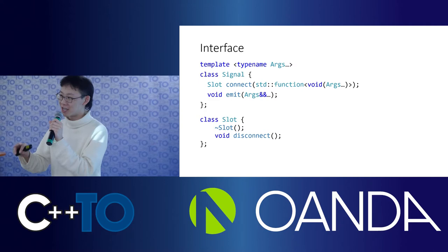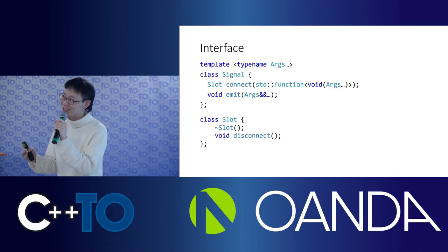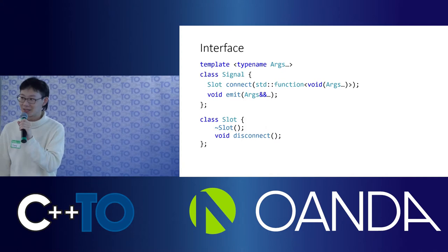The second method in the interface is emit, which is basically calling out the std::function objects in the array. And the last interface is disconnect, which means removing one function from the array.